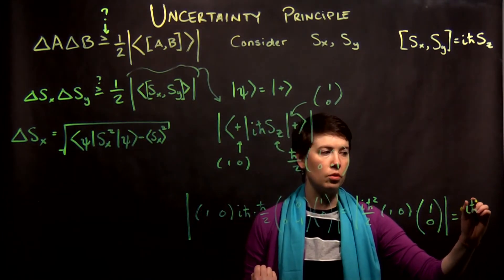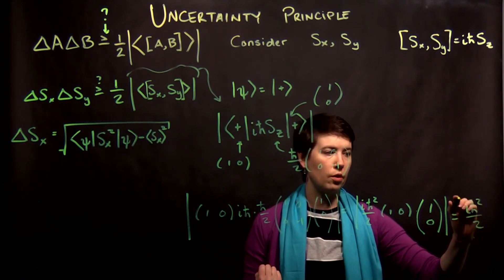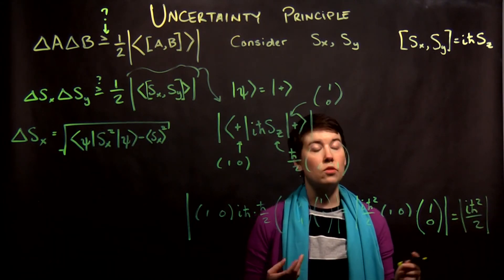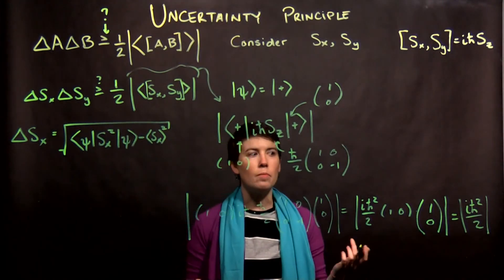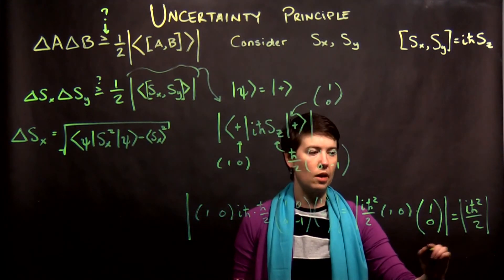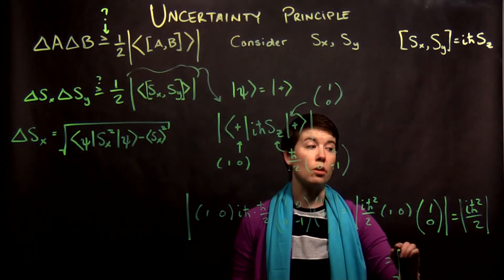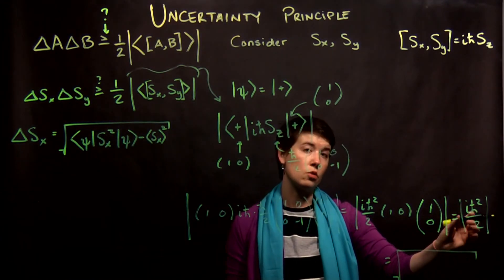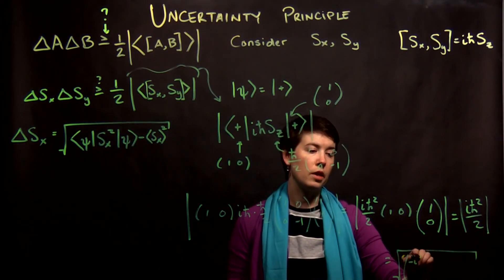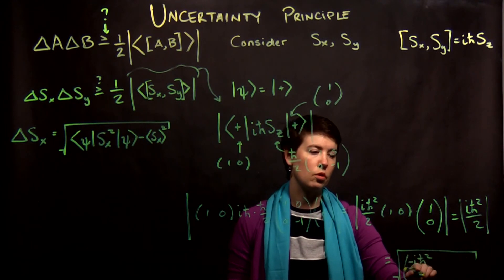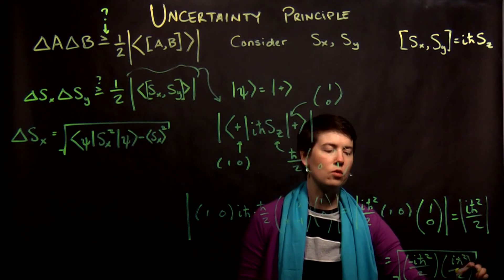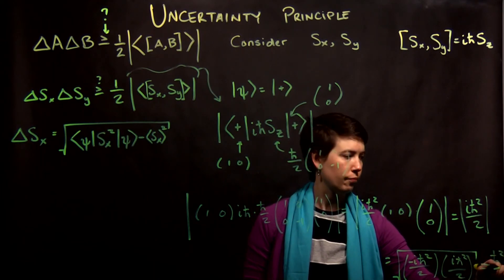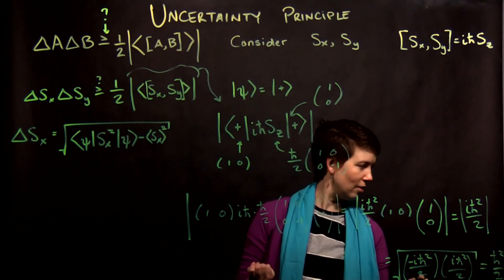So, we're actually left with the magnitude of i h-bar squared over 2. And so, this is a case where it's the squared magnitude, but the magnitude of this, we can write this now as the square root of the complex conjugate of this times itself. So, negative i h-bar squared over 2, i h-bar squared over 2, and that's just going to be h-bar squared over 2.